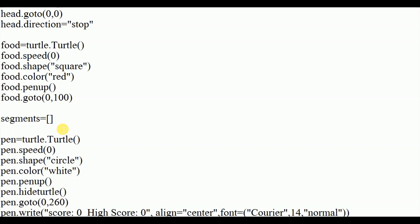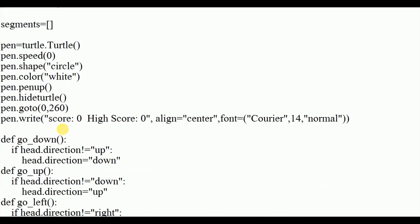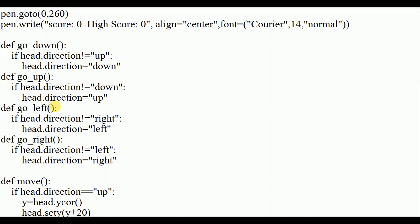Next I created an empty list called 'segments'. This holds the other body parts of the snake — when the snake eats food, a new circle is added to its body, and those added parts are stored in segments. I also created a 'pen' object to display the score text, positioned at (0, 260), writing 'Score: 0  High Score: 0' aligned center in Courier 14 normal font.